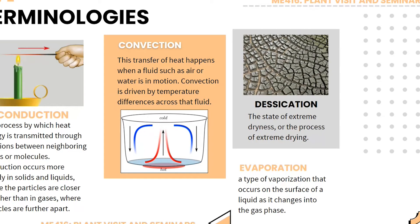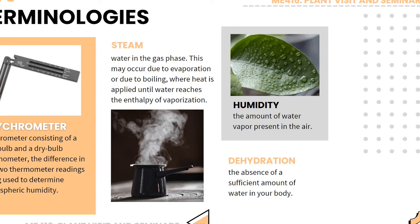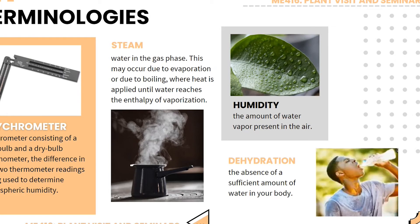Desiccation is the state of extreme dryness or the process of extreme drying. Evaporation is a type of vaporization that occurs on the surface of a liquid as it changes into the gas phase. A psychrometer is a hygrometer consisting of a wet bulb and a dry bulb thermometer; the difference in the two thermometer readings is used to determine atmospheric humidity — it is the tool used to check the humidity of a place. Steam is water in the gas phase, which may occur due to evaporation or boiling. Humidity is the amount of water vapor present in the air. Dehydration is the absence of a sufficient amount of water in your body.